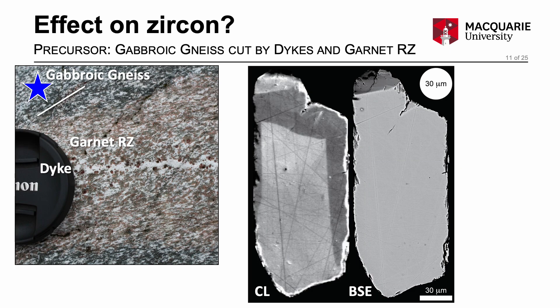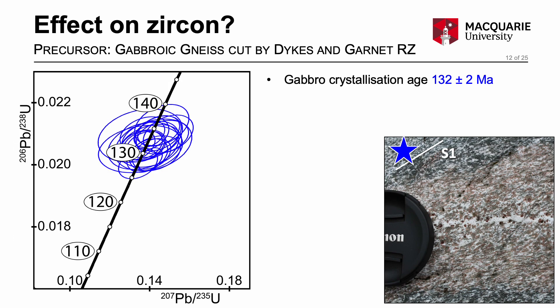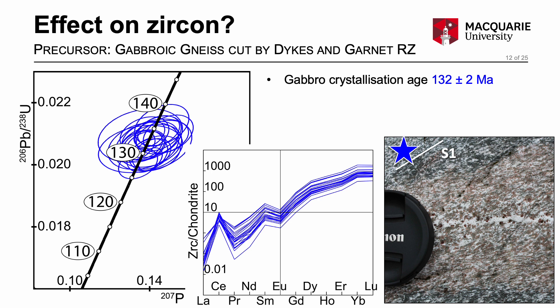The third part of the presentation examines how the melt migrating through a melphorite high strain zone interacts with zircon grains in the precursor gabbroic gneiss, and also the precursor zircons in the dykes and the garnet reaction zones. Starting with the gabbroic gneiss, we observe sector zoning in cathodoluminescence images of the zircon grains, and these grains are clear in backscattered electron images. Uranium-lead geochronology indicates the gabbro crystallised at about 132 million years ago, and rare earth element patterns are pretty typical for zircon.